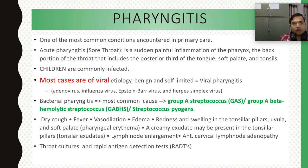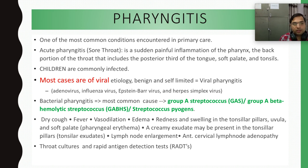Pharyngitis is inflammation of the pharynx. It is the most common condition encountered in primary care, also called as sore throat — painful inflammation of the pharynx and back portion of the throat that includes the posterior third of the tongue, soft palate, and tonsils. Most commonly children are affected because children don't have well-developed humoral immunity and antibodies.